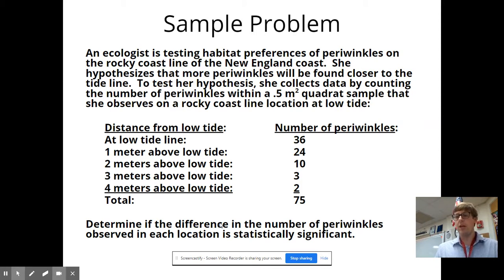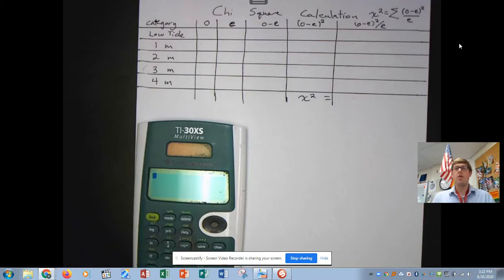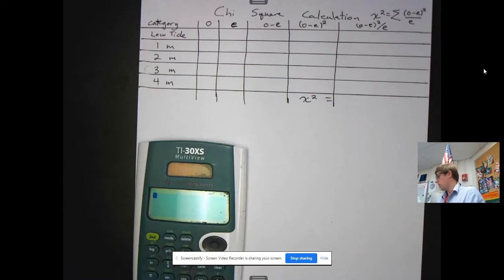I will show you how to do that calculation. This is how you perform the chi-squared calculation. The formula for the chi-squared calculation is sum of, in parentheses, o minus e squared over e. The best way to do that, because the sum of means you need to do the calculation for every single one of these groups and then add them all together. So, setting up a table I find to be the easiest way to go about it. From our sample problem, I'm going to fill in the observed values. This is what the ecologist actually observed.